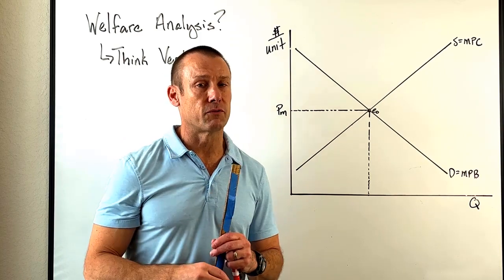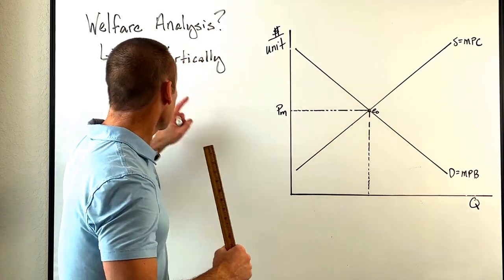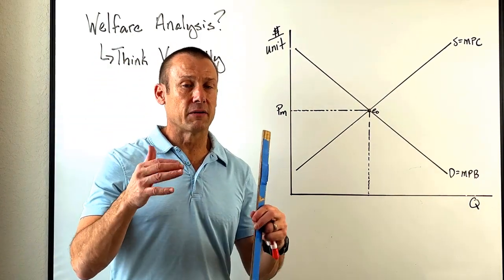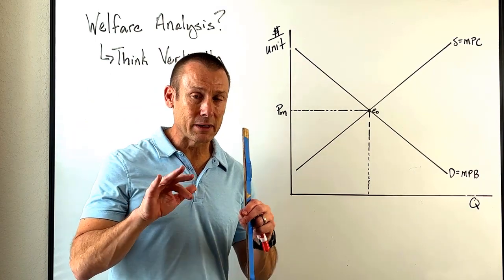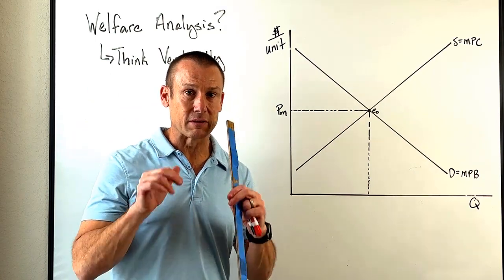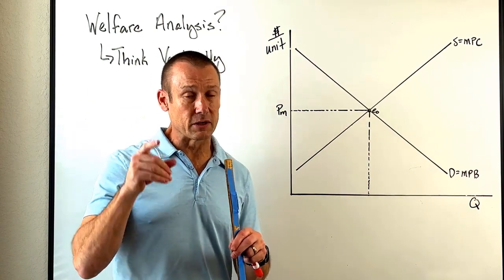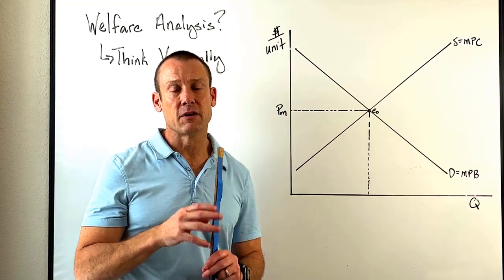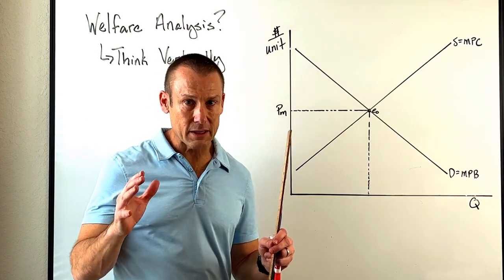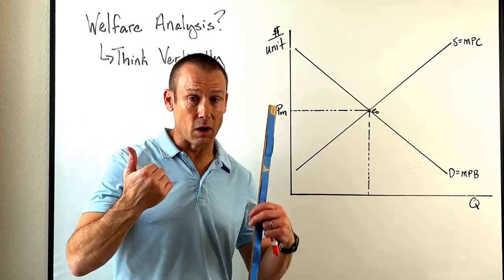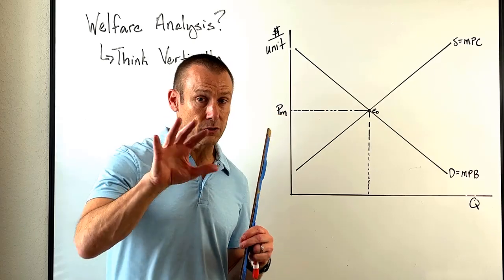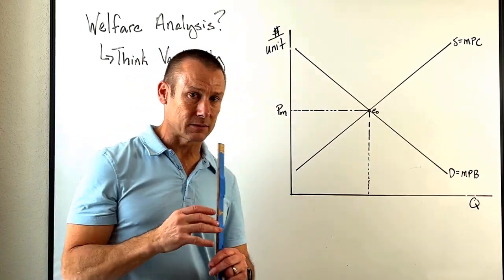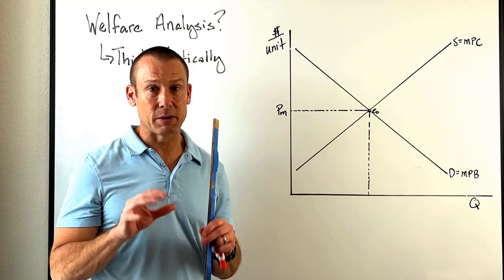Here's going to be the key to doing a welfare analysis: it is to think vertically. I've got to do a little groundwork and get in the weeds just a little bit to set this up, but stick with this video because it will help you out. In a microeconomics class, what we generally do at first is try to get you to think horizontally.